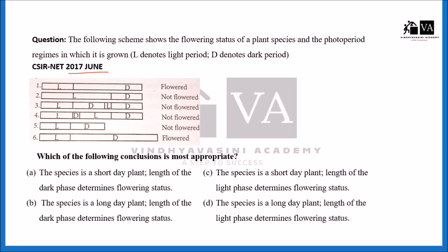So let's come to our question from 2017 June. The following scheme shows the flowering status of plant species and their photo period. In the first case, there is an uninterrupted long period of darkness and flowering occurs. When there is a long period of darkness and flowering occurs, it is the case of a short day plant.